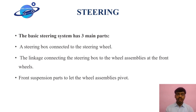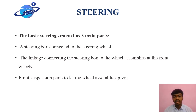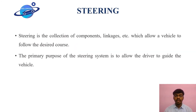Let's have a look at basic steering systems. This basic steering system has three main parts. The first one is a steering box connected to the steering wheel, then the linkage connecting the steering box to the wheel assembly at the front axle. The front suspension parts let the wheel assembly pivot. Steering is a collection of linkages and components which allows the vehicle to follow the desired path.